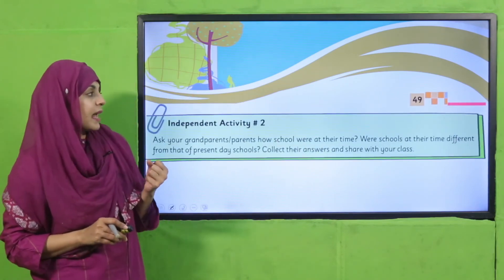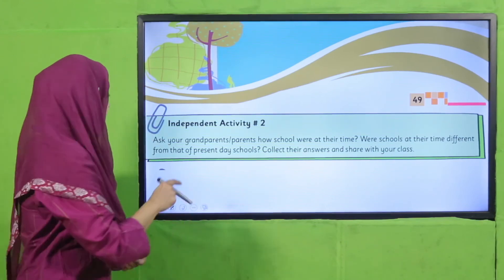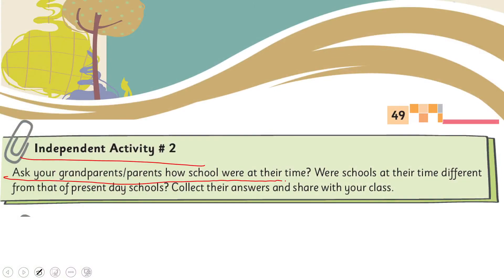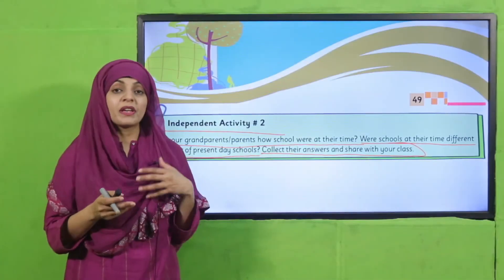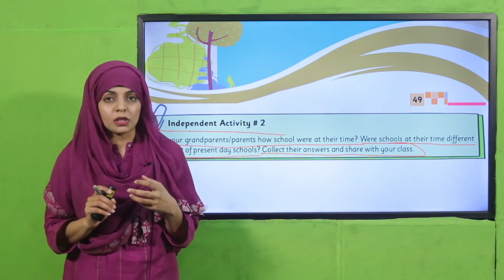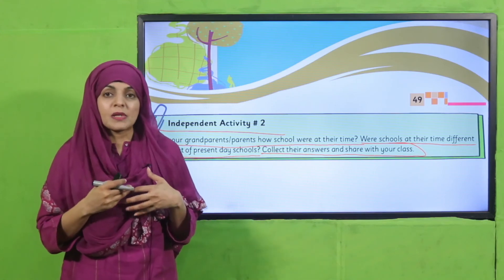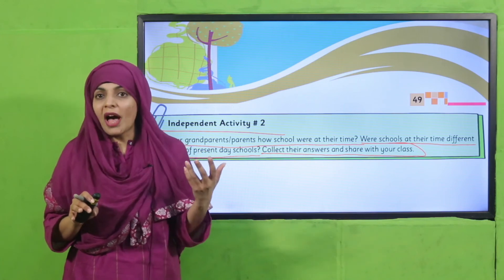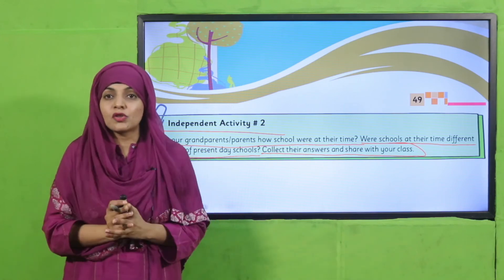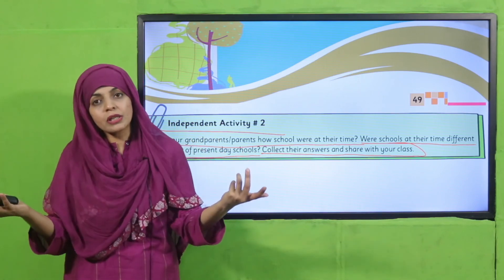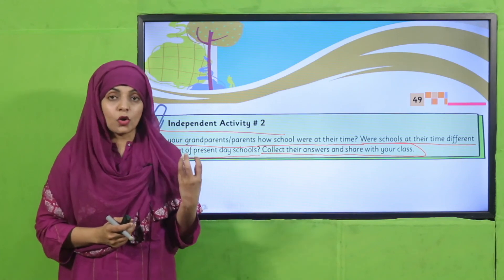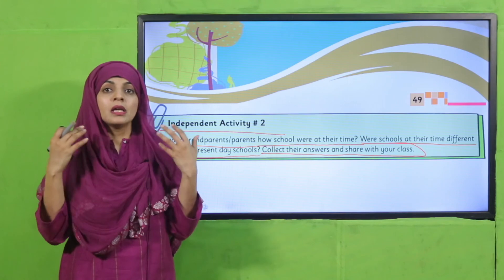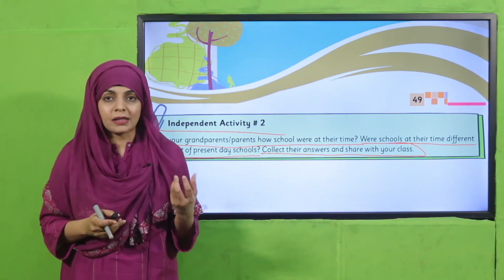Another homework activity on page 49 — independent activity number 2: ask your grandparents and parents how schools were in their time. Were schools different from present-day schools? Collect their answers and share with your class. Go home, ask your grandparents about the education system in their time, and compare it to your education system today. For example, ask them: did you have video lectures? Could you scan a code and watch a lesson? Of course not — so compare and share with your classmates. This is an oral activity.